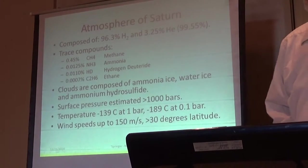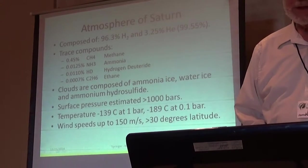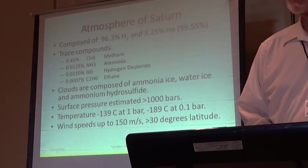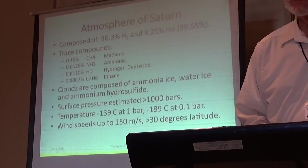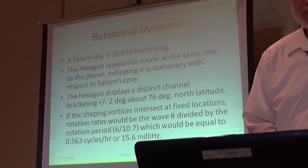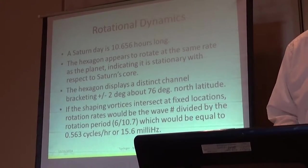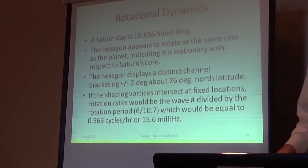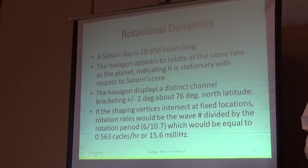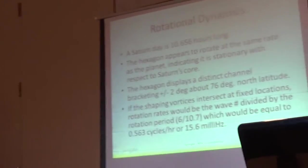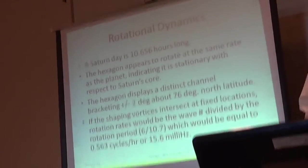This is just some information on the atmosphere of Saturn. It's mostly hydrogen and some helium. Surface pressure, a thousand bars, a bar of atmospheric pressure. It would be difficult to land on Saturn to move around. The day is 10.6 hours. The hexagon rotates with the planet. We first saw it with Voyager 30 years ago. It's probably been there for eons and eons.